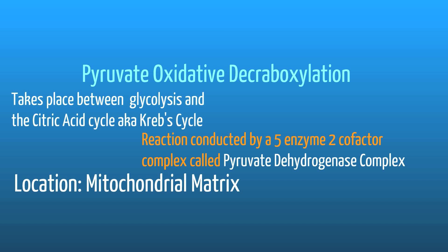Pyruvate decarboxylation is a step that occurs prior to the citric acid cycle and after glycolysis. It's important because it allows for the production of acetyl-CoA, which you need in the citric acid cycle. This reaction is an irreversible reaction and is actually an accumulation of many small reactions. What is special about this step is that the enzyme complex, called the pyruvate dehydrogenase complex, which helps run this reaction, is composed of five different enzymes.